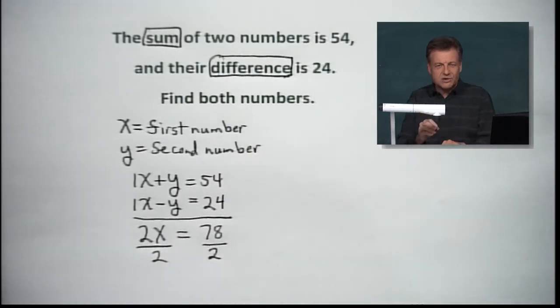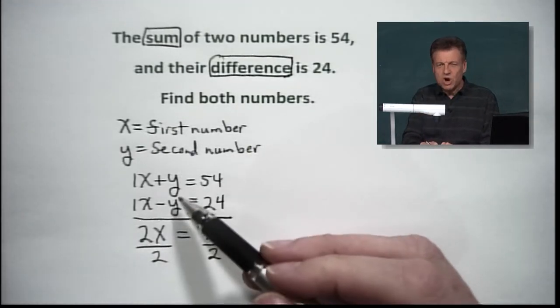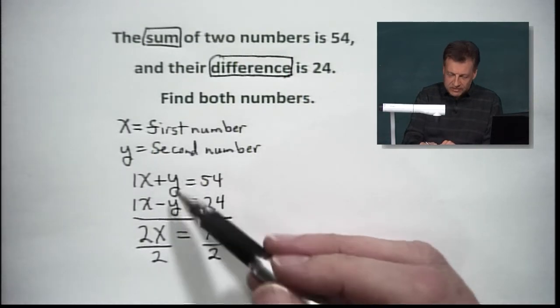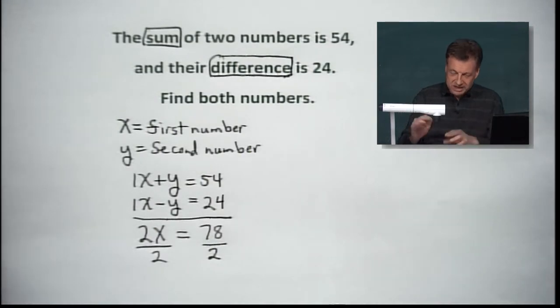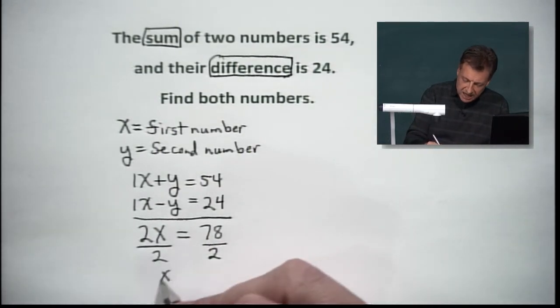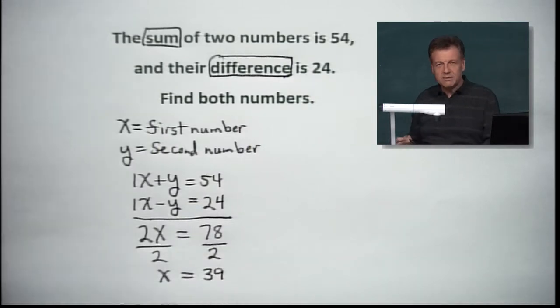By the way, I want everybody to notice something. These systems are really pretty easy to do. Once you realize you've just got to figure out a way to get rid of the variable, and this one was set up ready to go. So let's see if we get X equals 39. I think that's what 78 divided by 2 is.